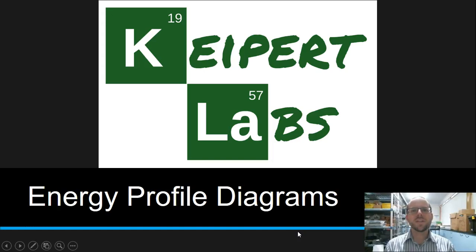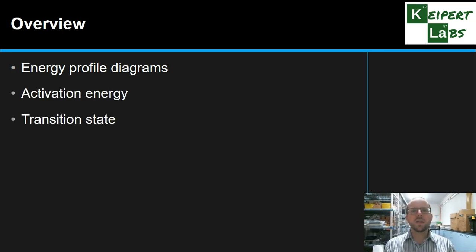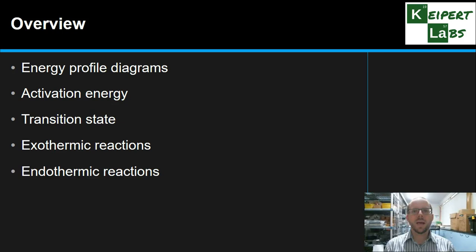Hi everyone, welcome to this episode of Kuypert Labs. In today's video we're going to be discussing energy profile diagrams. We're going to take a look at what we mean by an energy profile diagram, then define some key concepts like activation energy and transition state, and look at examples of exothermic and endothermic chemical reactions and how their diagrams look.